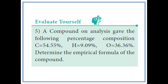Question: Evaluate Yourself 5. A compound on analysis gave the following percentage composition: Carbon 54.55%, Hydrogen 9.09%, Oxygen 36.36%. Determine the empirical formula of the compound.